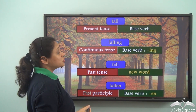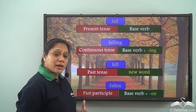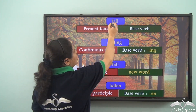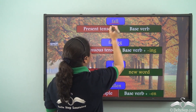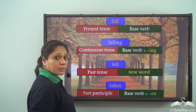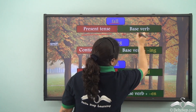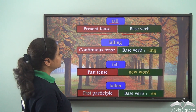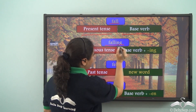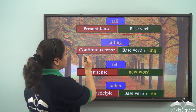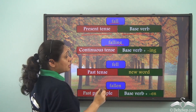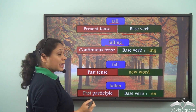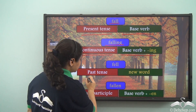The verb 'fall' takes various forms. It takes the form 'fall' in the present tense, which is the base verb form. It takes the form 'falling' in the continuous tense, formed by adding '-ing' to the base verb.